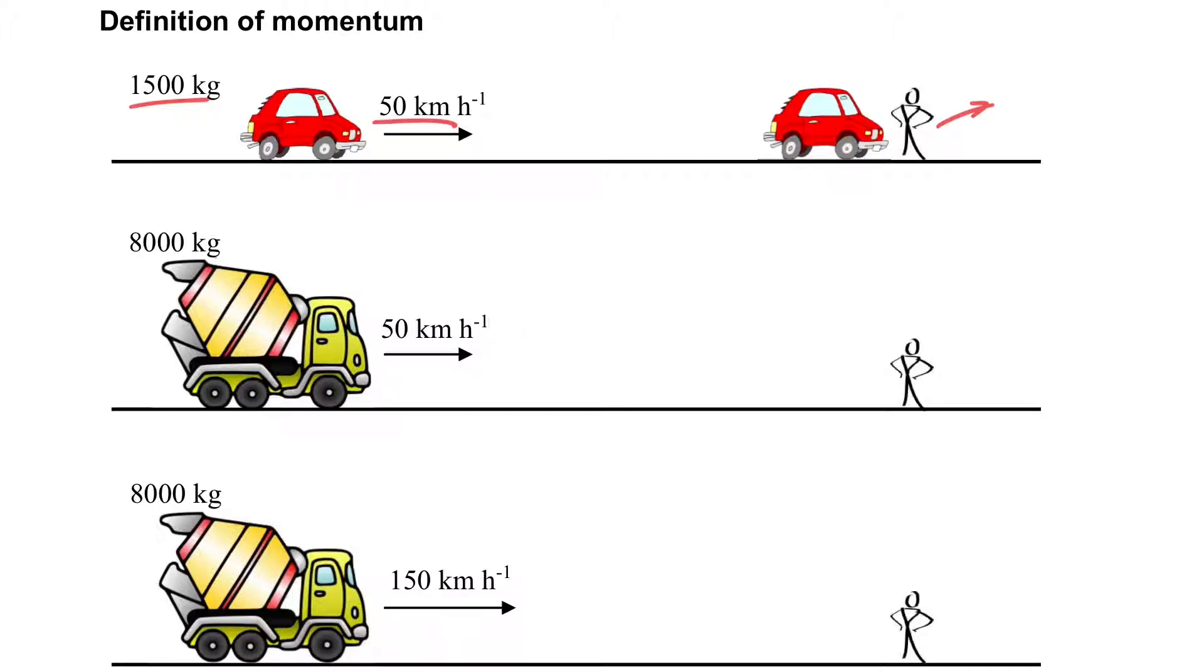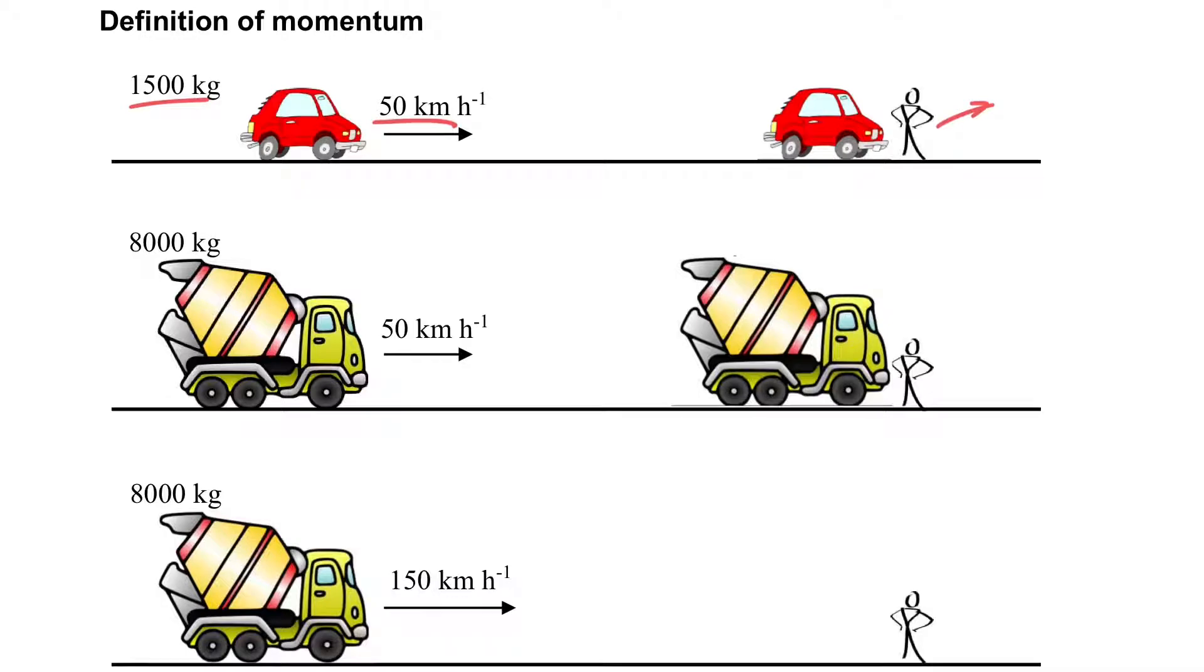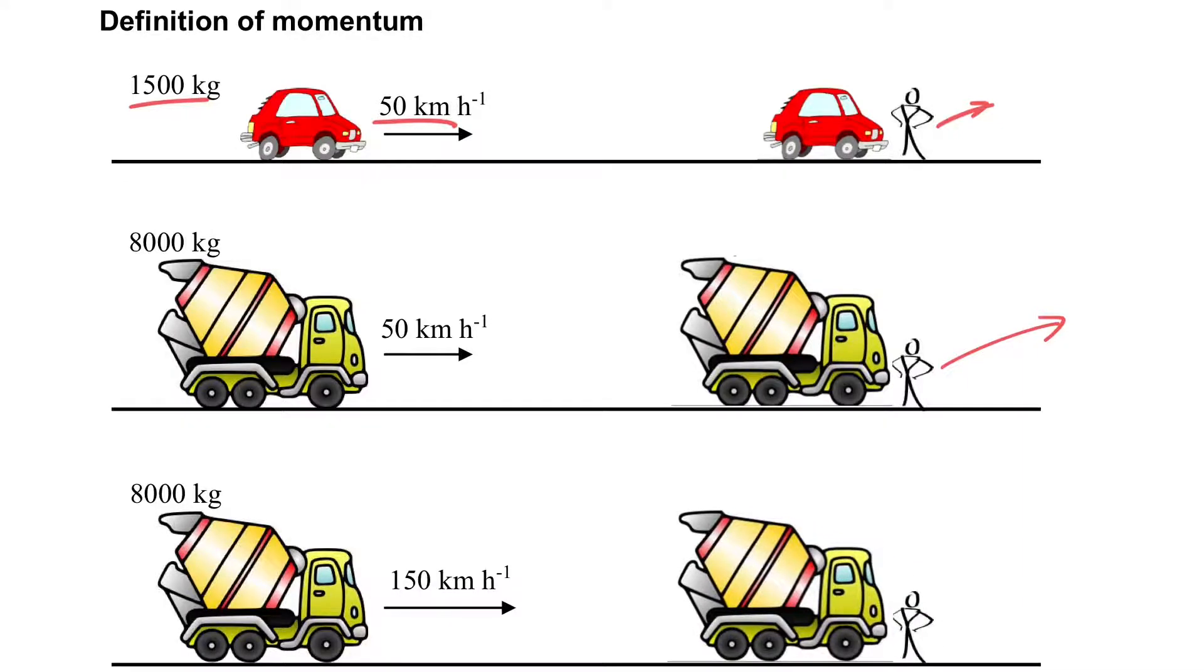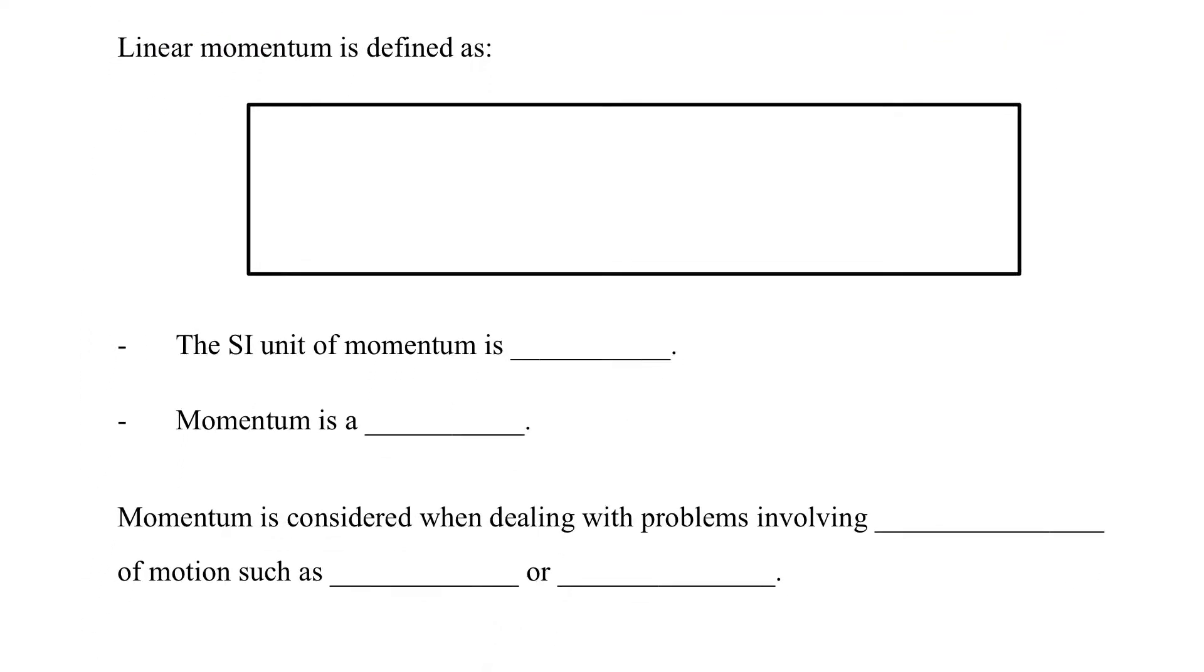Then what if we have a car with the same speed but much heavier when it hits the person? We expect that the person will have larger damage. What if the large car has a higher speed? We expect the person will be completely damaged. So the mass and the velocity, these two variables contribute to the damage of something. This is the idea of momentum.